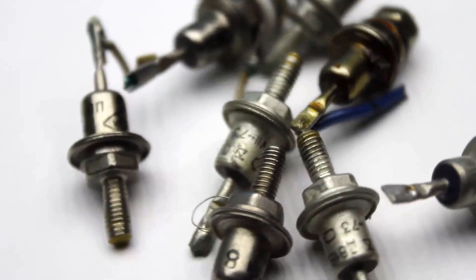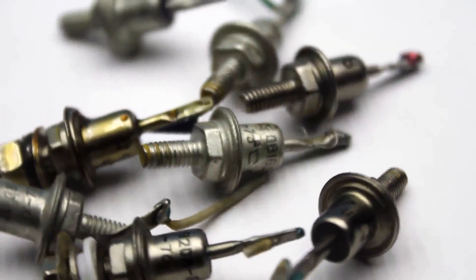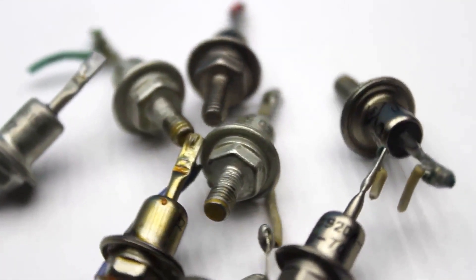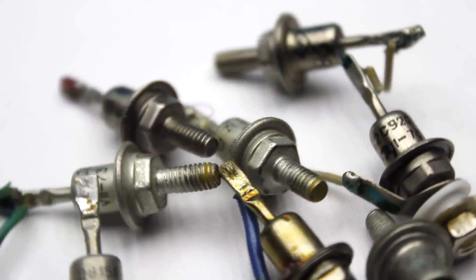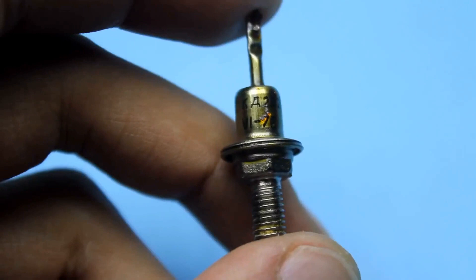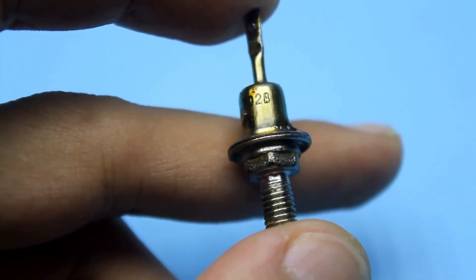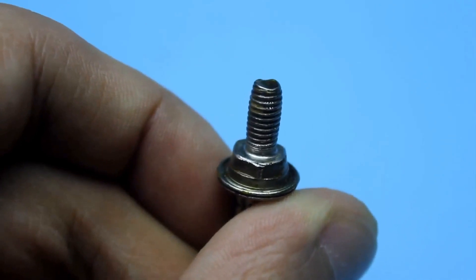There were also such diodes in the Soviet Union, quite popular by the way. These are the KD202 series diodes. The maximum operating frequency of the diode is up to 5 kilohertz. The reverse voltage could be from 50 to 600 volts. The diode current ranges from 3 to 5 amperes. The pulse current could reach up to 10 amperes. The diodes were produced in a metal casing with a screw clamp. The casing was the cathode, and the top pin was the anode.